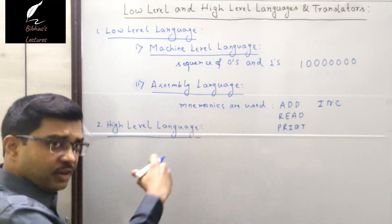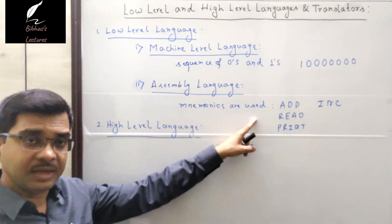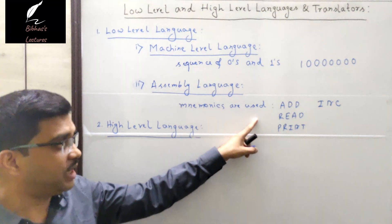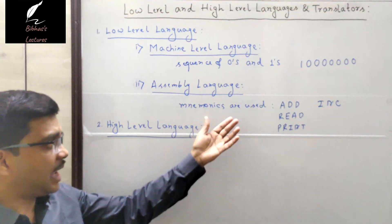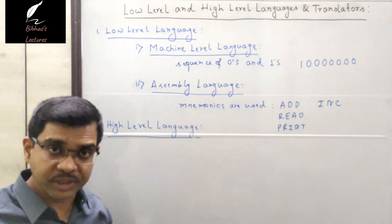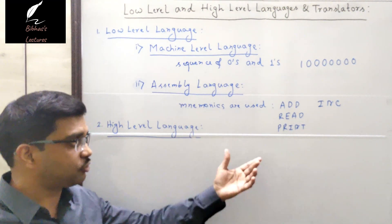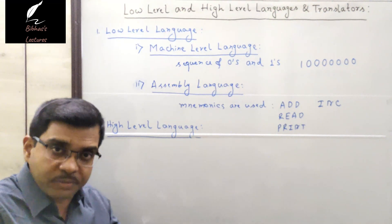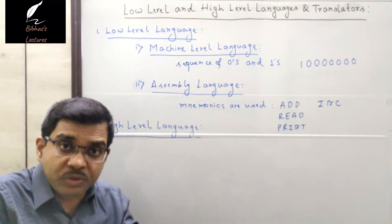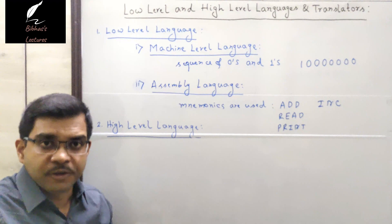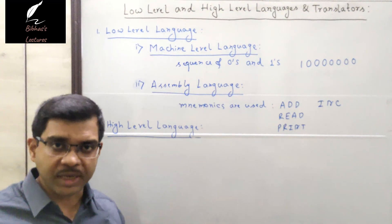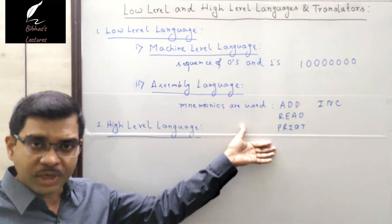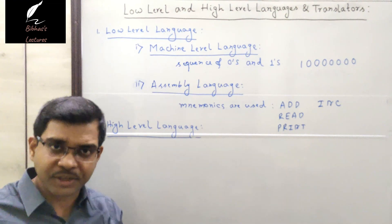Assembly language is a first step to make programming languages readable and understandable by human beings. When programs are written using assembly language, translators are required to convert assembly level language to machine level language. The software that does this is called an assembler. Since it needs to be converted, it takes more time and is a bit slower than machine language, but the main advantage is that it is much more understandable and comparatively easier to write programs.